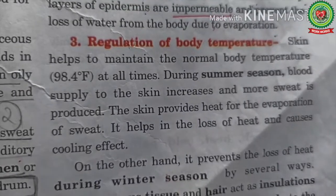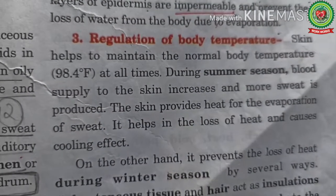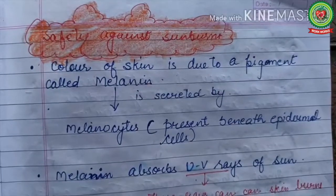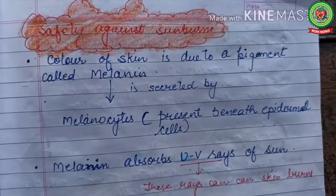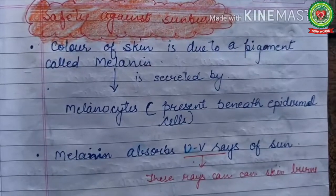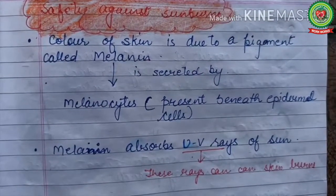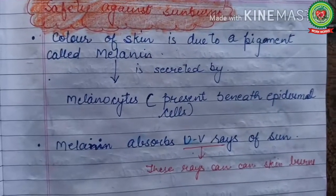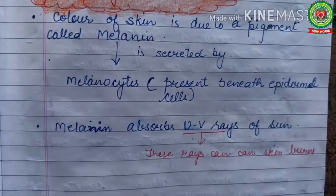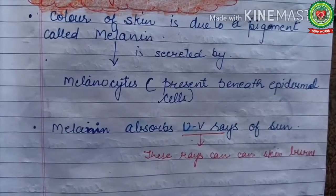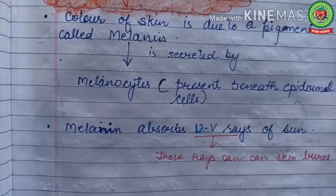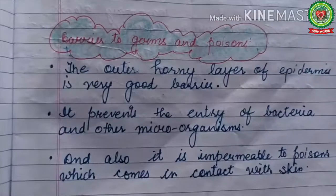This is how skin helps in regulation of body temperature. Next function is safety against sunburns. The color of skin is due to a pigment called melanin, secreted by melanocytes present beneath the epidermal cells. Melanin absorbs ultraviolet rays of the sun, which can cause sunburns.